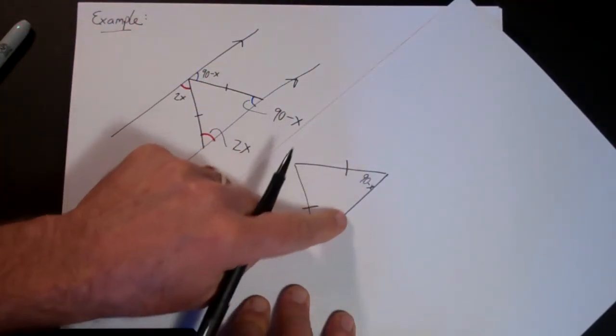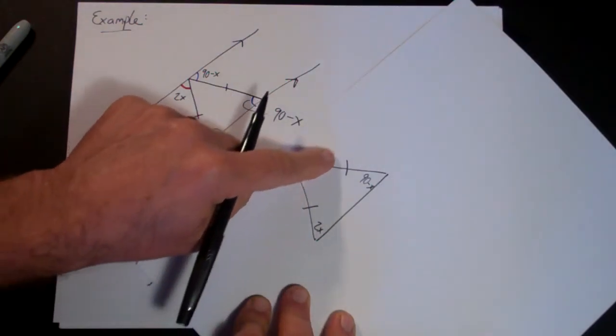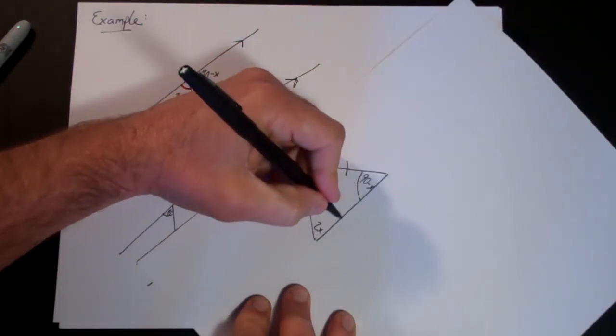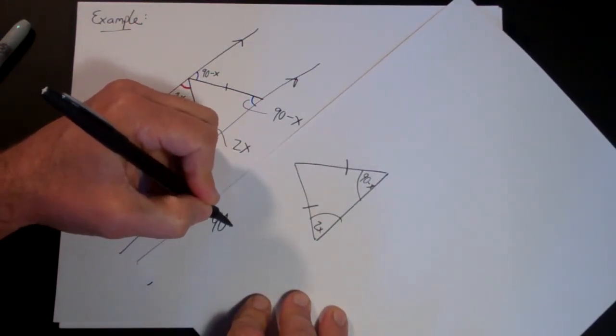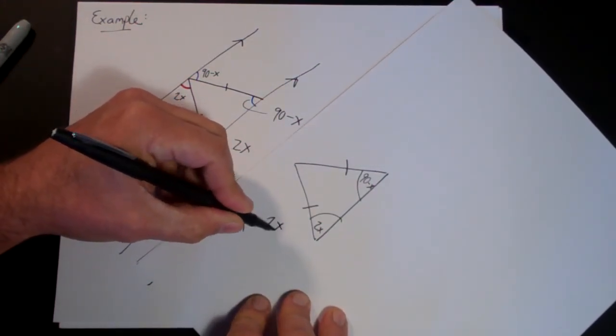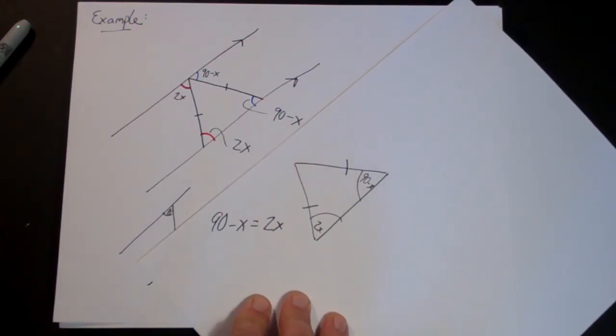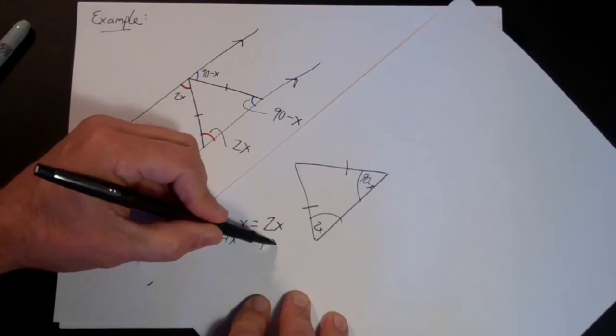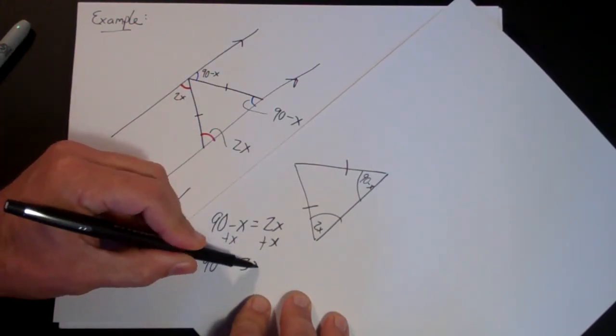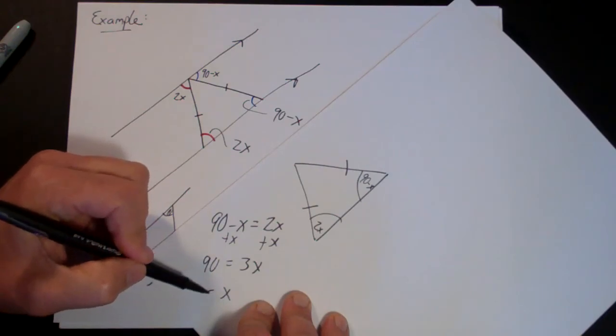I know that if two sides of a triangle are equal then the two angles are equal. Right? That's the isosceles triangle theorem. So I know that 90 minus x is 2x and now it's just algebra. I am going to add x to both sides. And then I get 90 is equal to 3x, and x is 30.